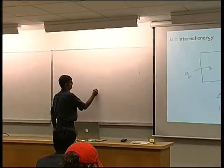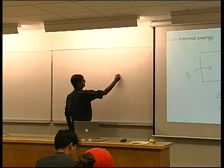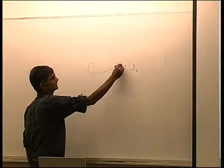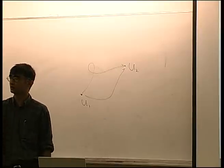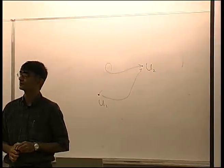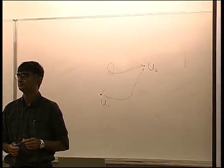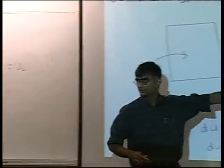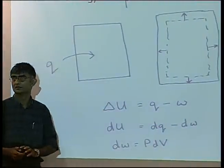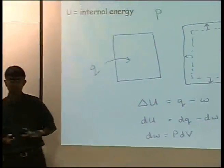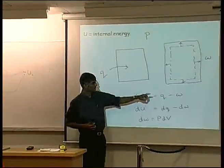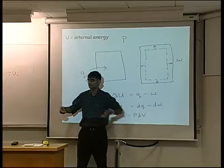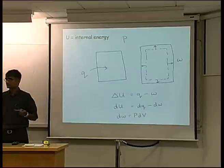So if I have a certain internal energy here, and another internal energy here, then these values are completely independent of the paths by which I get from one point to the other. The work done by the body on the system is defined as negative, because by the body doing work, we are losing internal energy. Work done on the system is positive — it makes sense to have the body's work as negative.